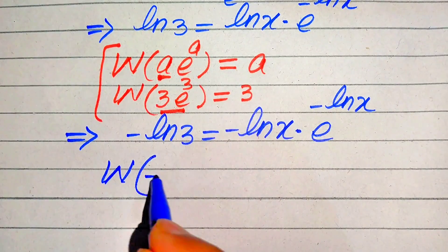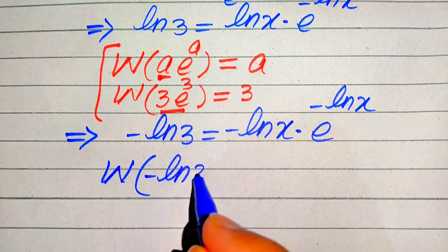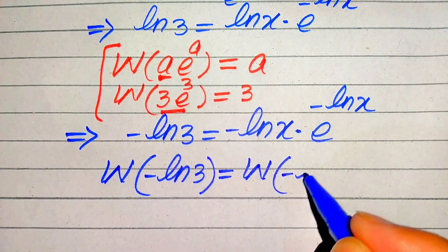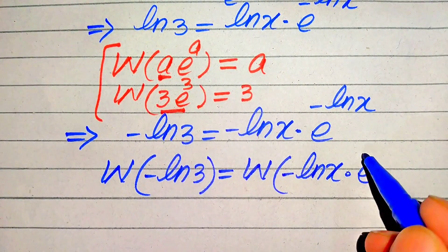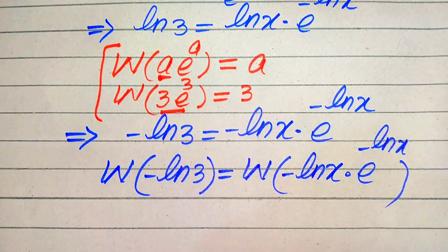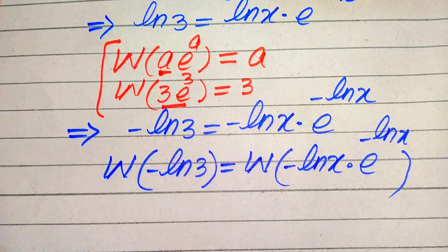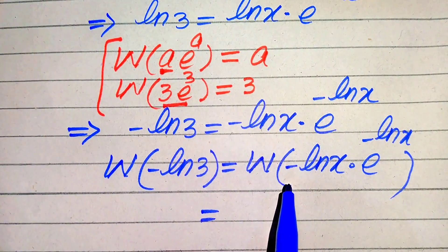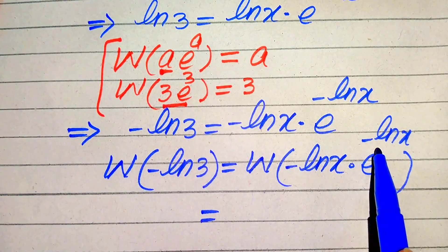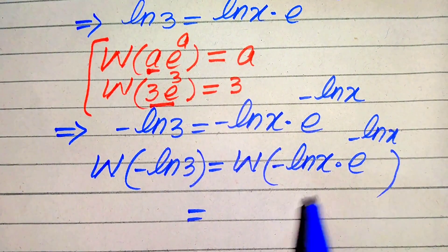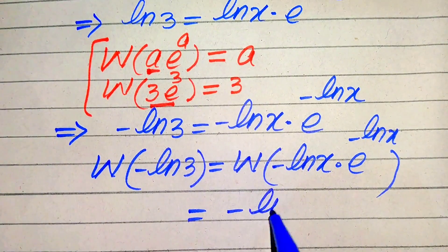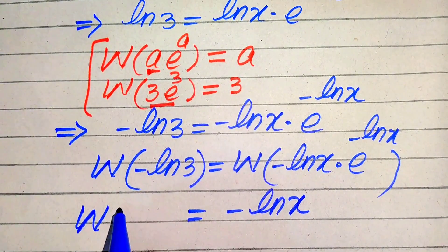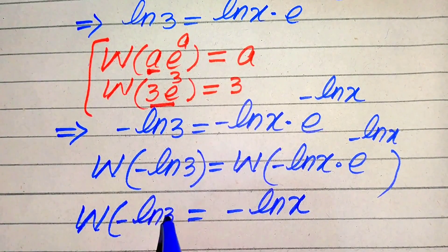We apply the W function on both sides: W of (minus log 3) equals W of (minus log x times e to the power of minus log x). After applying the W function, the output of the right hand side is the exponent of e, which is minus log x. So the right hand side simplifies to minus log x, and the left hand side is W of (minus log 3).